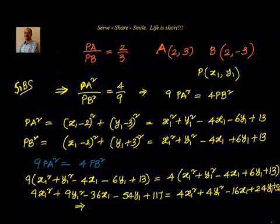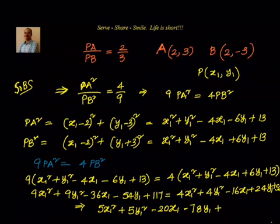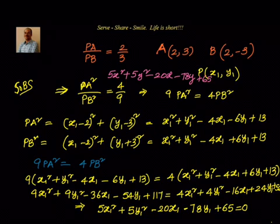Now we try to bring everything to the left-hand side. We will have 5x1² + 5y1² — then -36 + 16 gives -20x1 — then -54 - 24 gives -78y1 — and 117 - 52 gives 65, equal to 0. So the locus, replacing x1 and y1 with x and y, will be: 5x² + 5y² - 20x - 78y + 65 = 0.